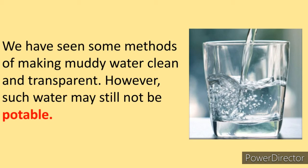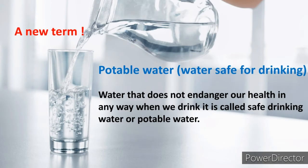We try to make water pure, but however such water may still not be potable. 'Potable' means pure water which can be used for drinking — clean water. Remember this. Now we will learn what potable water means: water safe for drinking. Potable water means water which is safe for drinking — water that does not endanger our health in any way when we drink it. It is called safe drinking water or potable water.